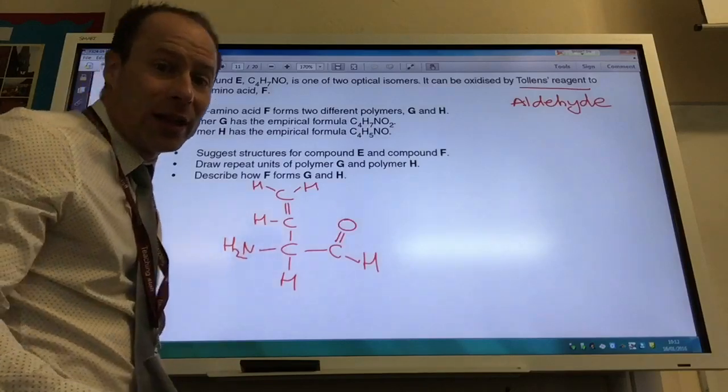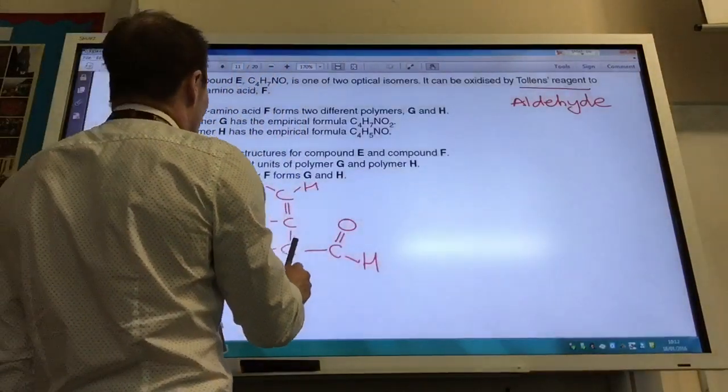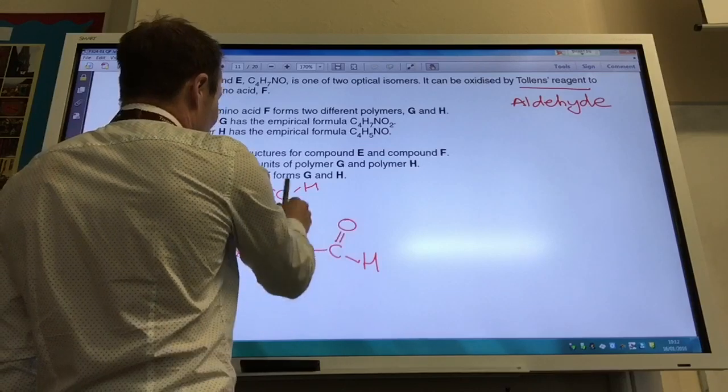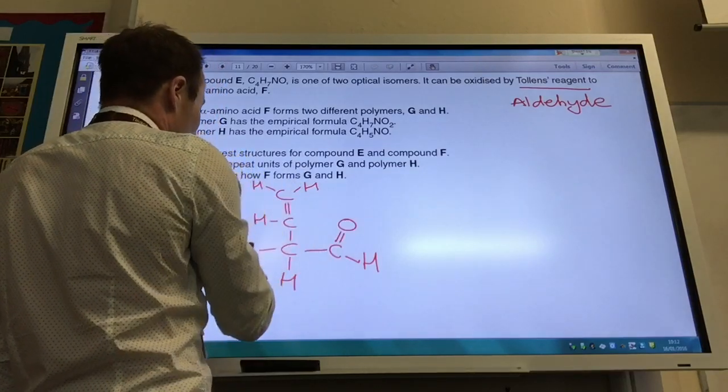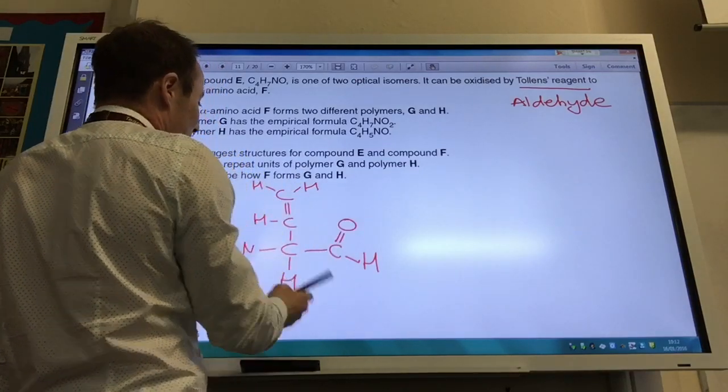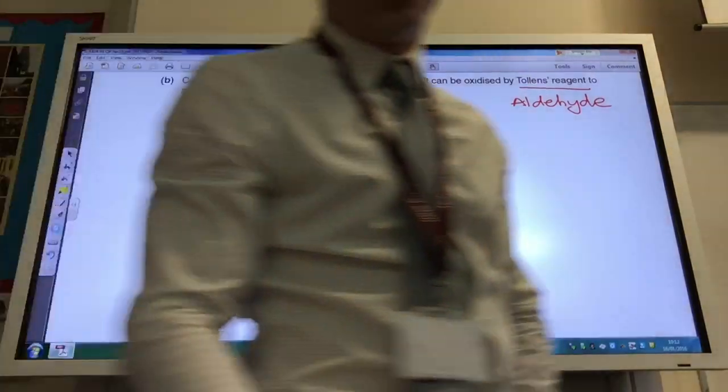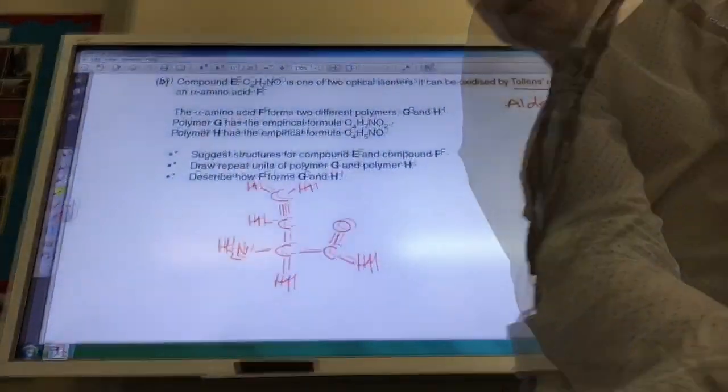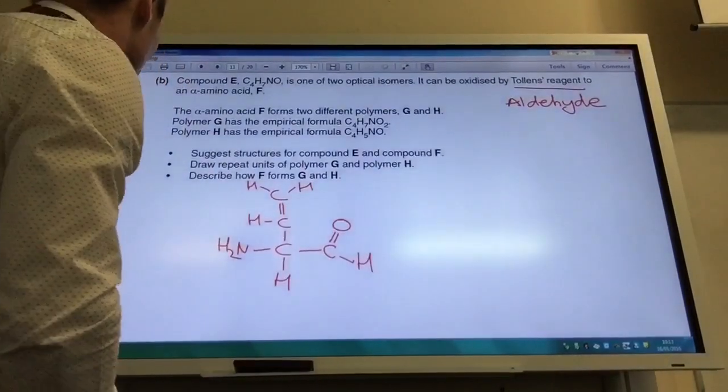Let's do a quick check. So I'm going to have four carbons, one, two, three, four. I've got seven hydrogens, one, two, three, four, five, six, seven, one O, one N, all sorted. Okay, so we've sorted out that one. All's well with the world.